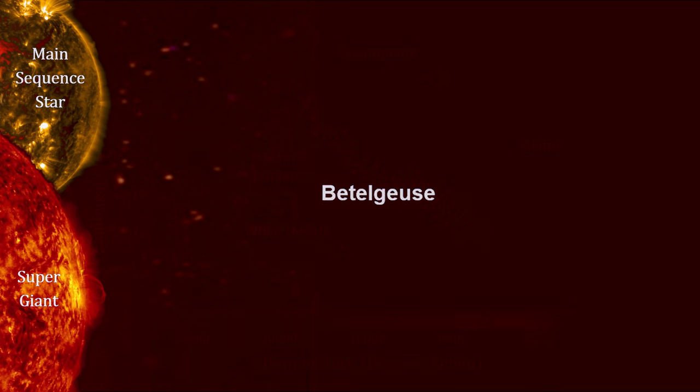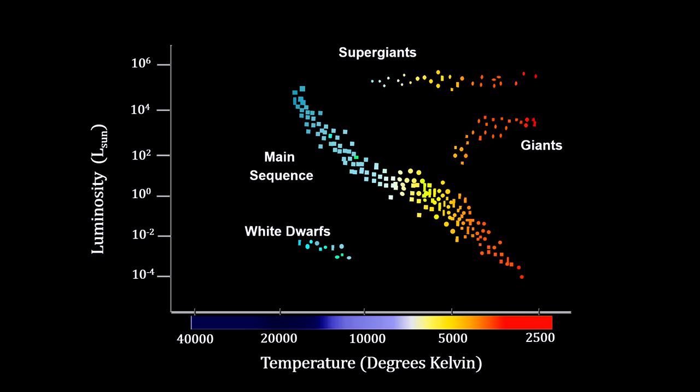We'll use Betelgeuse to illustrate how star spectra works with the HR diagram to determine a star's distance. First, we use the star's color, temperature, and spectra to find its point on the horizontal axis.